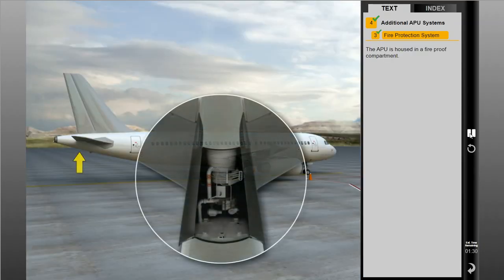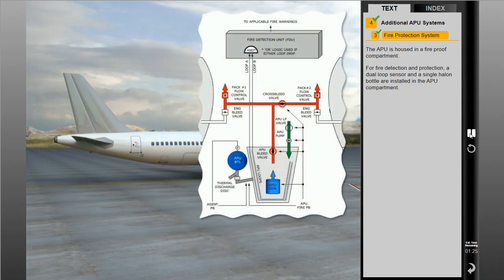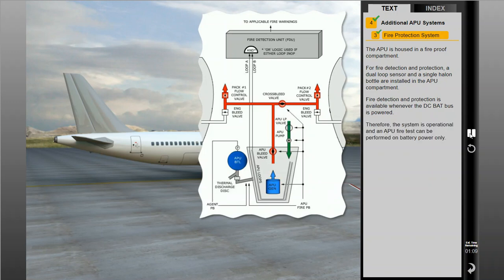The APU is housed in a fireproof compartment. For fire detection and protection, a dual-loop sensor and a single halon bottle are installed in the APU compartment. Fire detection and protection is available whenever the DC battery bus is powered. Therefore, the system is operational and an APU fire test can be performed on battery power only.